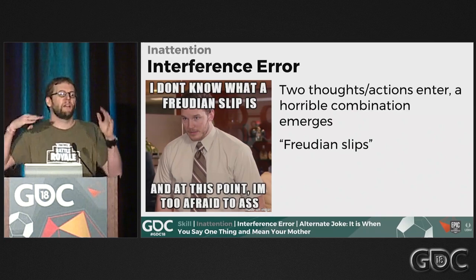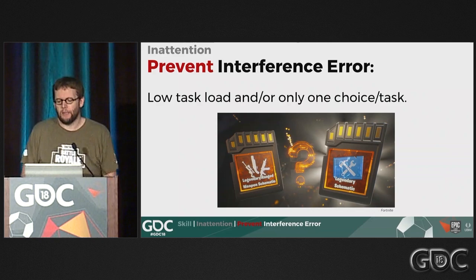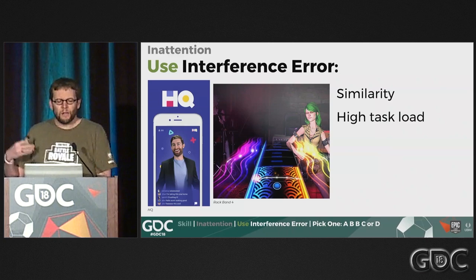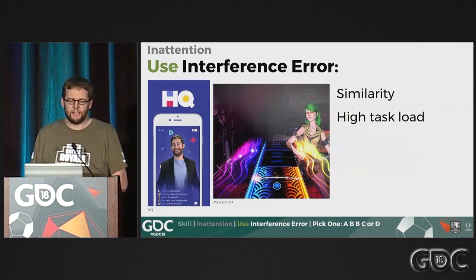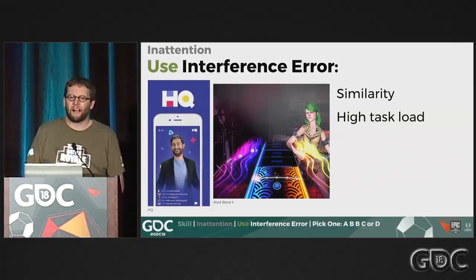To prevent interference errors, having low task load and only one choice or task at a time is the most effective approach. To use them intentionally, you do this in quiz games — as questions get harder, you make options look very similar to each other and increase time pressure, so this error is more likely to happen and someone picks something that looks right fast, automatically, without really thinking.